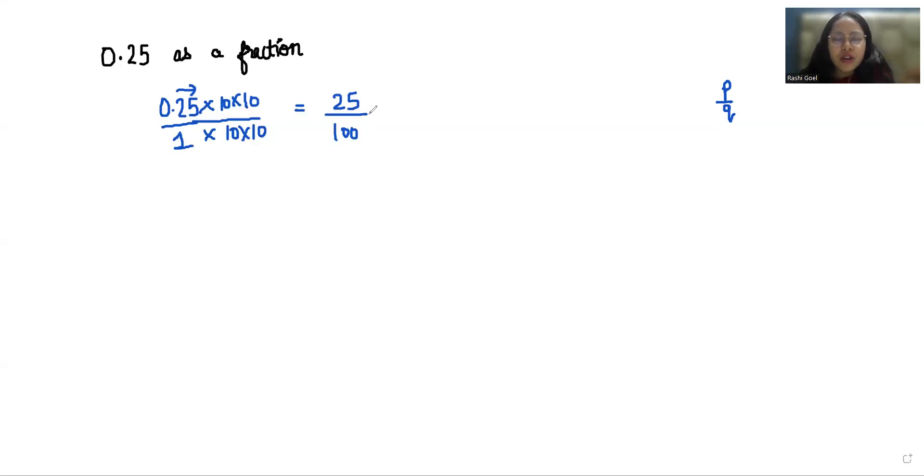Both 25 and 100 are divisible by 5. We can directly divide by 25 as well, but we'll take short steps. This will give us 5 by 20. Now again I'm going to divide by 5 in numerator and denominator.